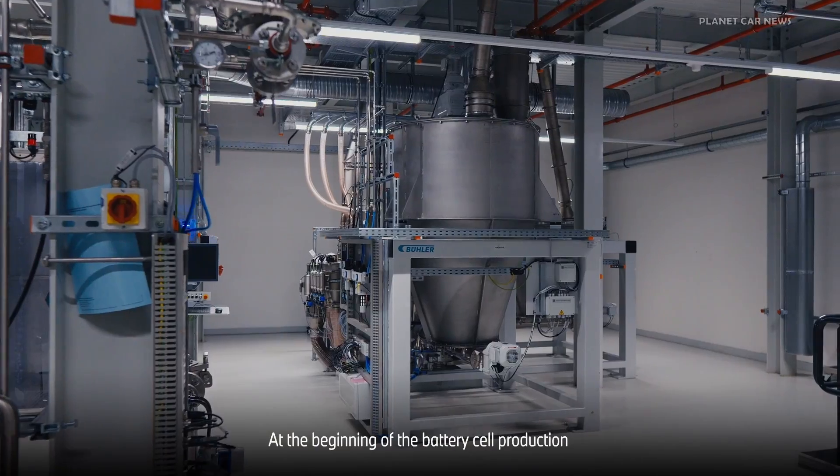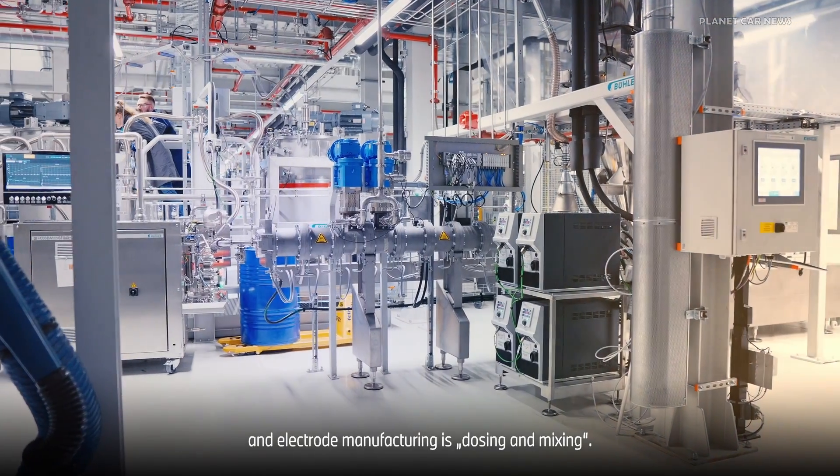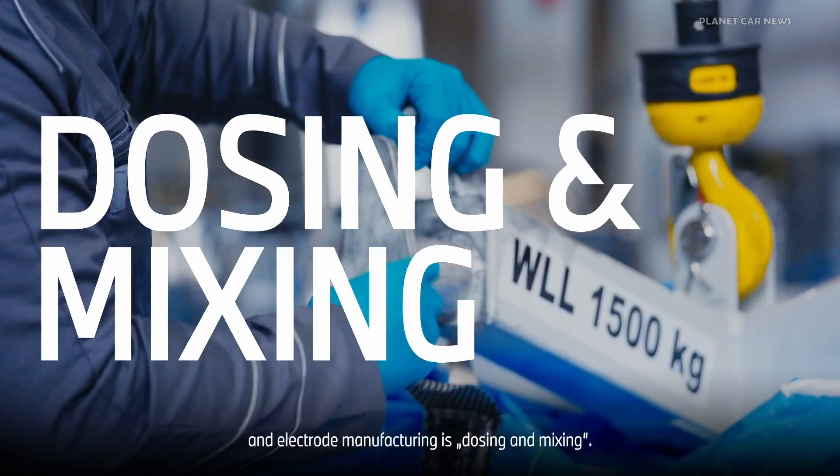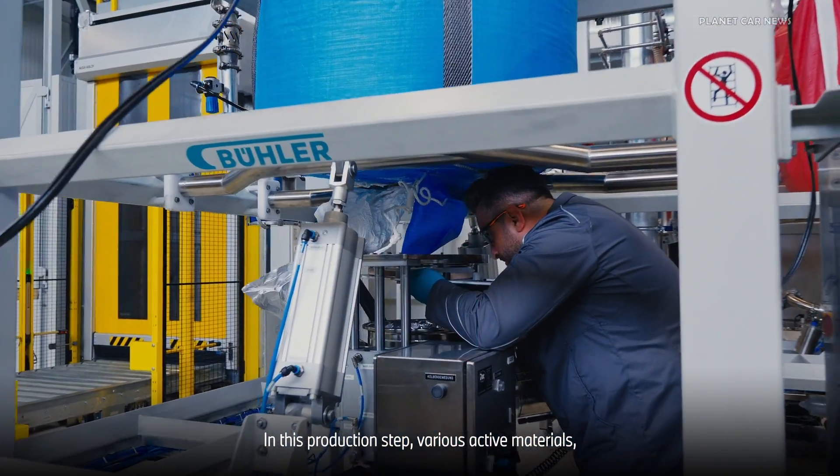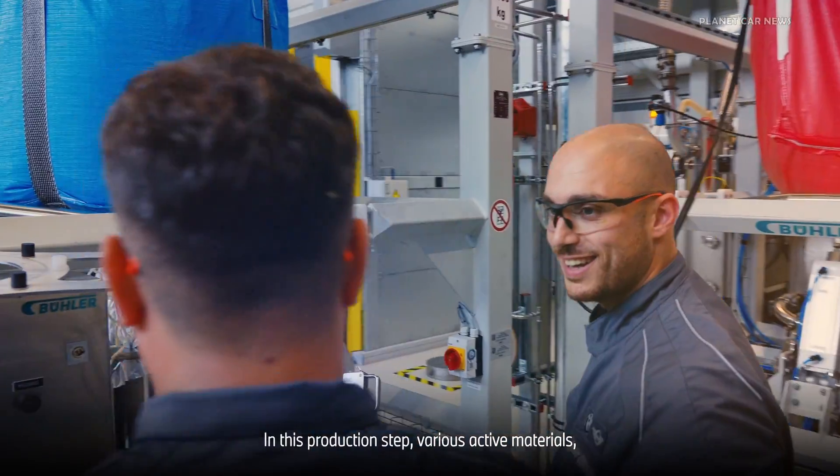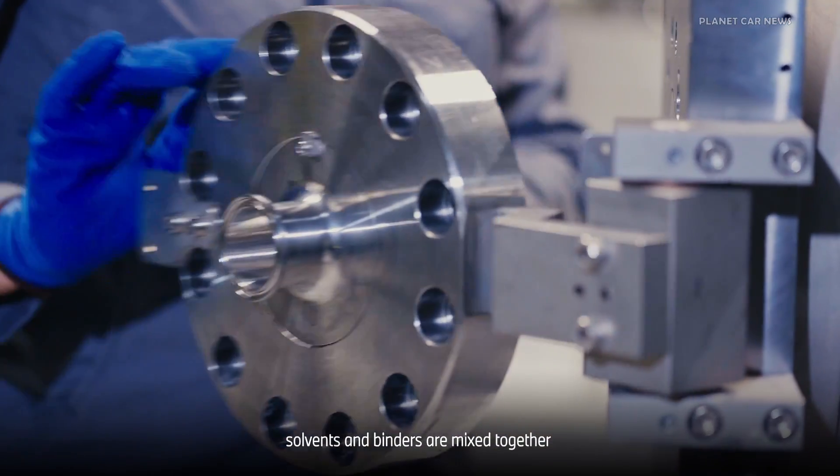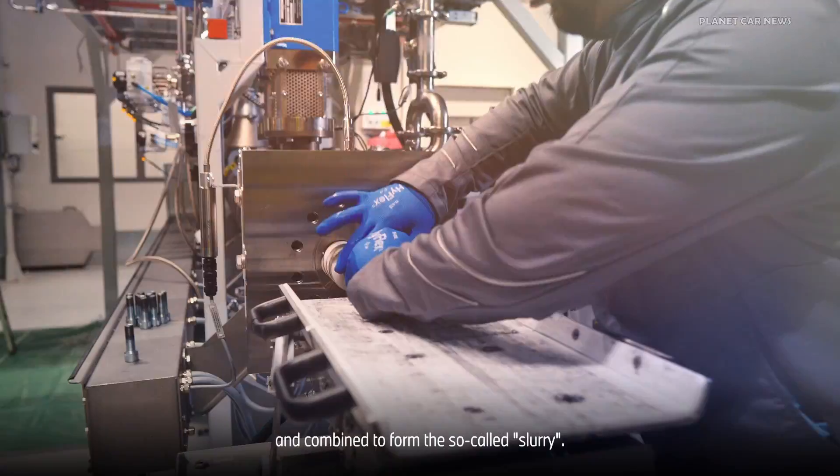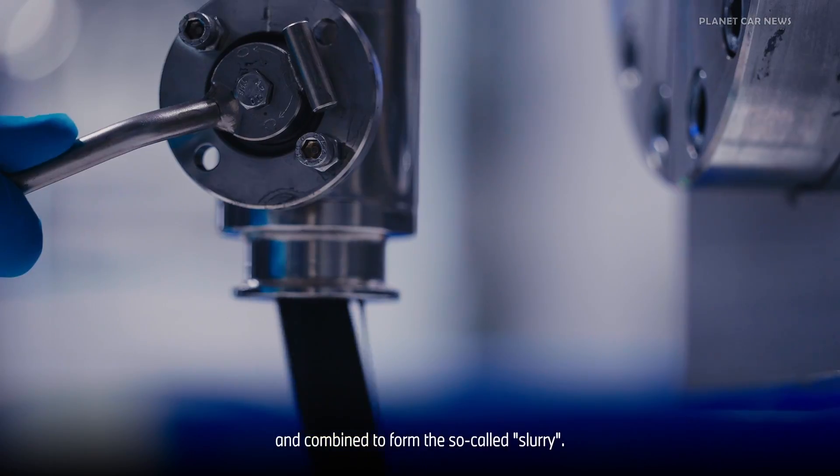At the beginning of the battery cell production and electrode manufacturing is dosing and mixing. In this production step, various active materials, solvents, and binders are mixed together and combined to form the so-called slurry.